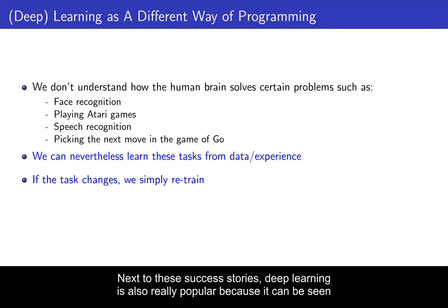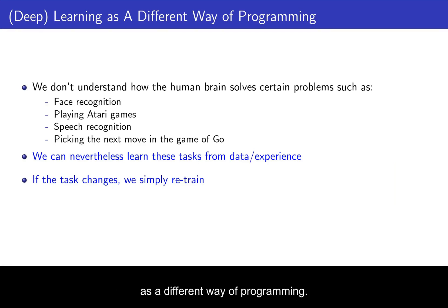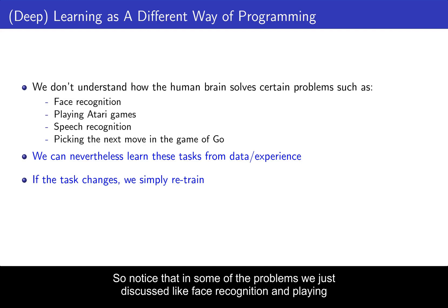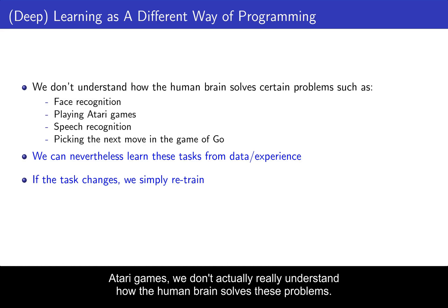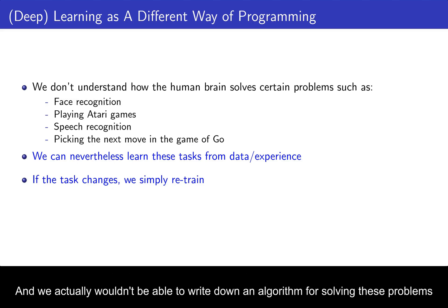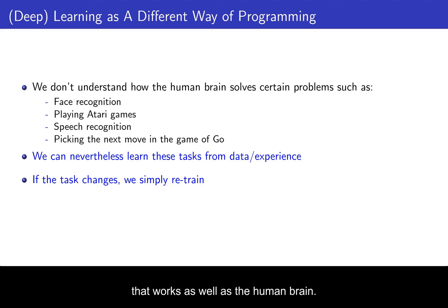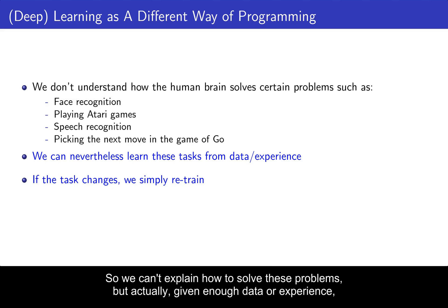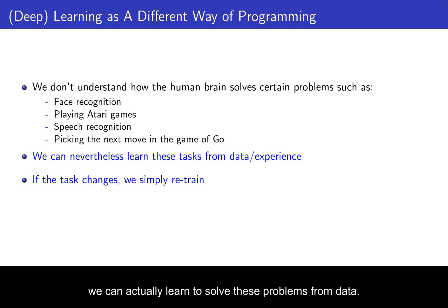Next to these success stories, deep learning is also really popular because it can be seen as a different way of programming. In some of the problems we just discussed — like face recognition and playing Atari games — we don't actually understand how the human brain solves these problems, and we wouldn't be able to write down an algorithm that works as well. So we can't explain how to solve these problems, but given enough data or experience, we can actually learn to solve them from data. And that's a pretty powerful concept.